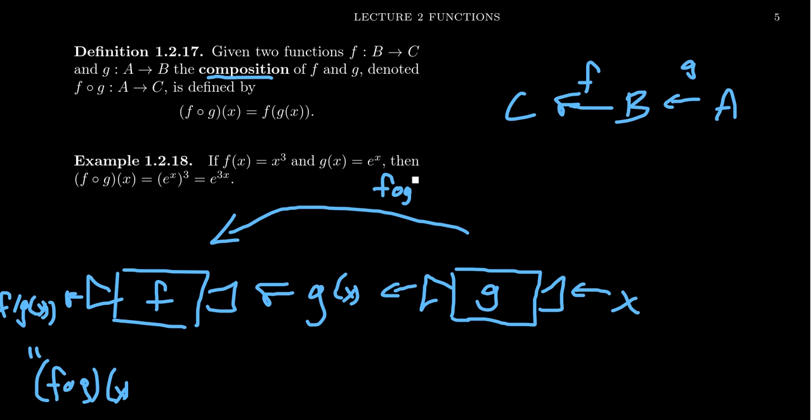The things coming out of G need to be something inside of B right here. And this is where that idea of domain and co-domain comes into play. In order for this function composition to work, the co-domain of G has to be the domain of F.